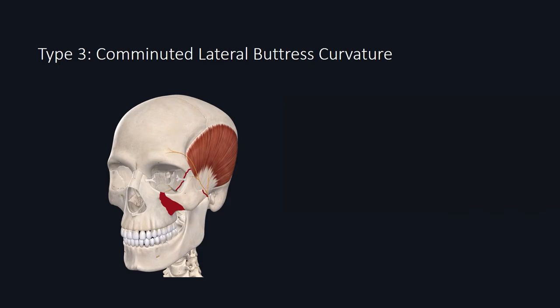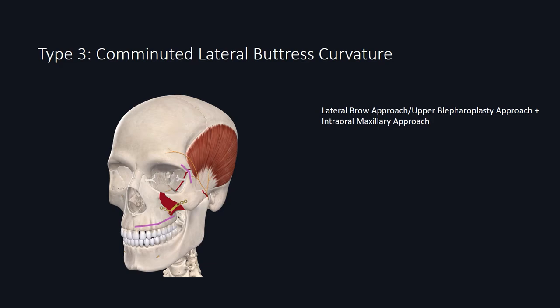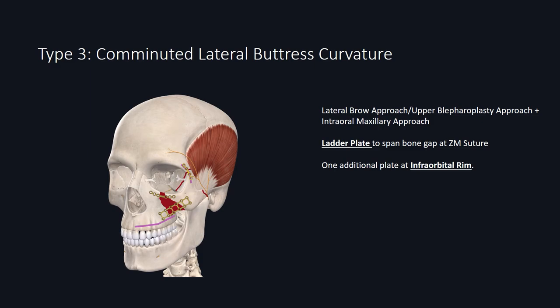In Type 3 fracture, you have comminution occurring along the lateral maxillary buttress, commonly seen in elderly or edentulous patients whose maxillary bone has thinned over the years. The approach is similar to Type 2 using lateral brow and intraoral incision. Due to poor bone stock and a large bone gap along the anterior maxillary sinus wall, plate and screw placement is more difficult. In this situation, a ladder plate provides greater stability, as two plates fused side by side give more options for screw placement with limited thick bone. It also minimizes the risk of cheek skin falling into the maxillary sinus. If there is persistent instability at the malar eminence, place an additional plate along the infraorbital rim. There is no need to plate the zygomatic arch with sufficient stability from three plates.